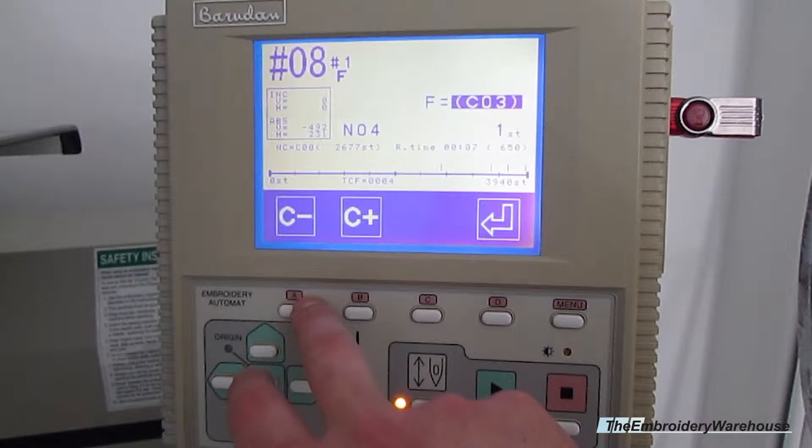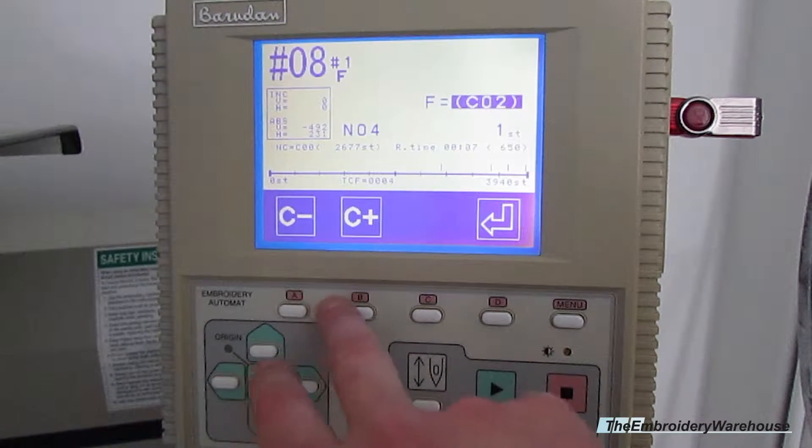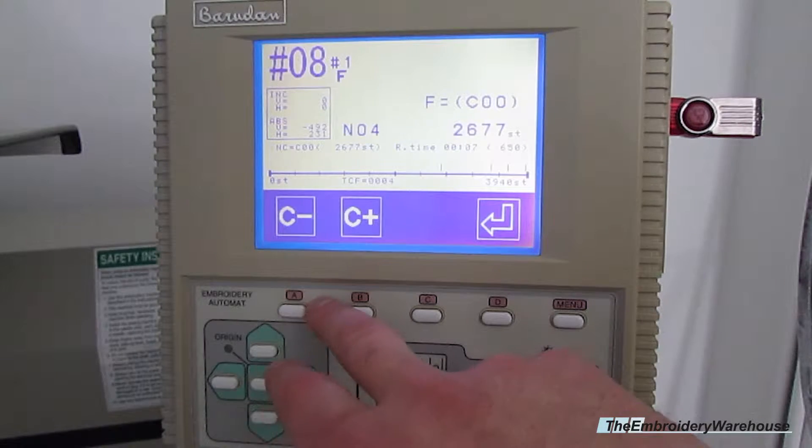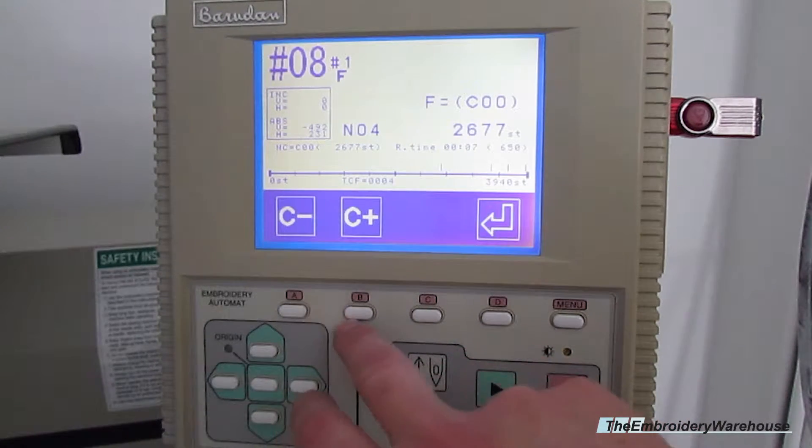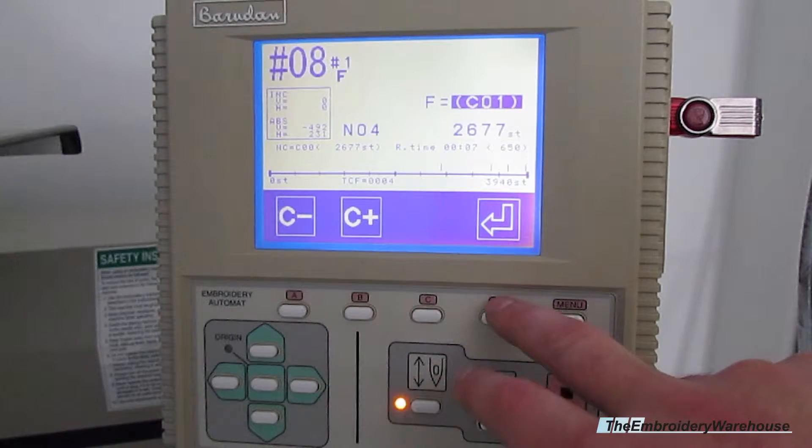I'm going to go ahead and select color 4 for my first color, hit enter. Then I'm going to select color 1 for my second color.